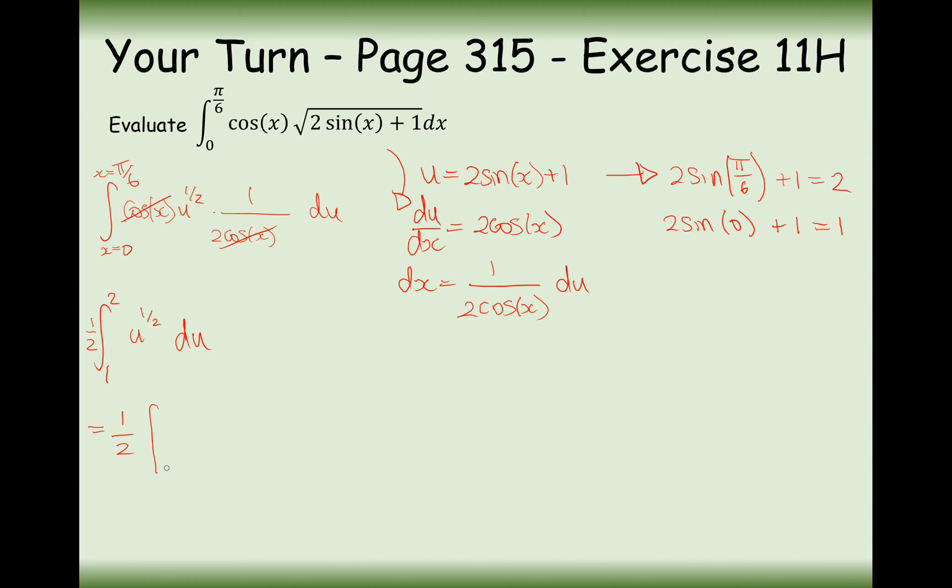So what we'll get eventually is increasing the power by 1 and then dividing by the new power in between the boundary of 2 and 1. Let's simplify what we've got here first. Those 2s will cancel, so it'll just be a third u to the 3 over 2, 2 to 1. Substituting in 2 first, that's going to be the square root of 8 over 3 minus a third. So it's going to be the square root of 8 minus 1 all over 3. And there we are, that's the answer to that question. Then we've worked out the area in between this curve, the line for this curve, the x equals 0 boundary, the x equals pi by 6 boundary, and the x-axis boundary as well. So this is in units squared.